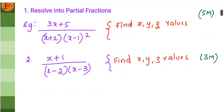The first topic is partial fractions. Here you have two problems from the 5 marker and one from the 3 marker. The 5 marker problem has a square in the denominator, and the 3 marker is a simpler one. You just have to find x, y, z values using the partial fraction method and you can easily get 8 marks from this.